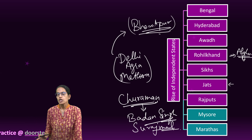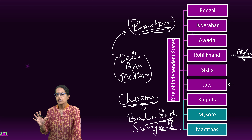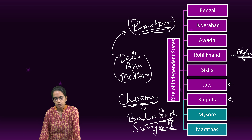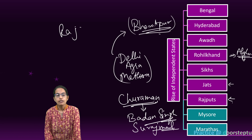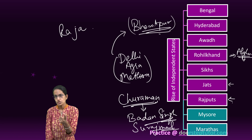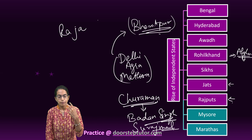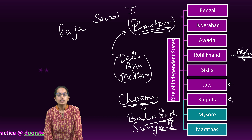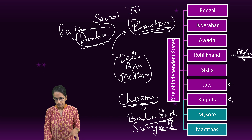Then we had the Rajputs. Rajputs during the 18th century were not that powerful. One of the important contributions of the Rajputs during this time was by Raja Sawai Jai Singh. Jaipur — the pink city as we call it — was the city he established. Raja Sawai Jai Singh was the king of Amer; Jaipur was during that time also known as Amer.